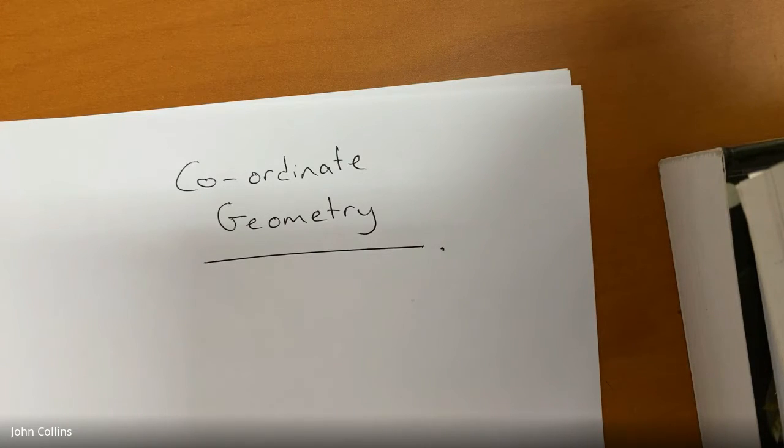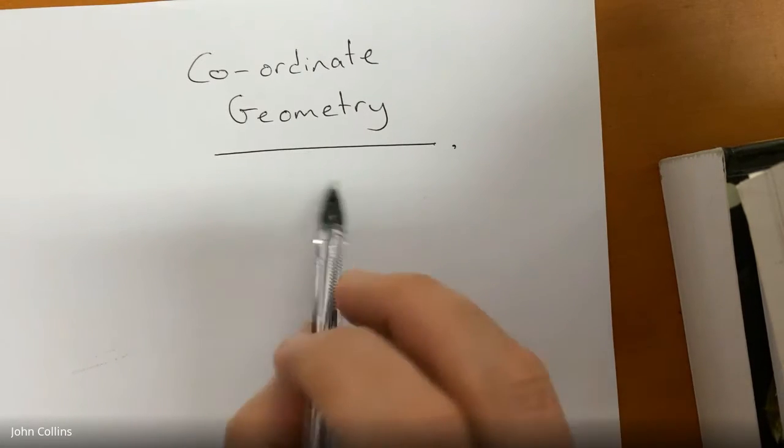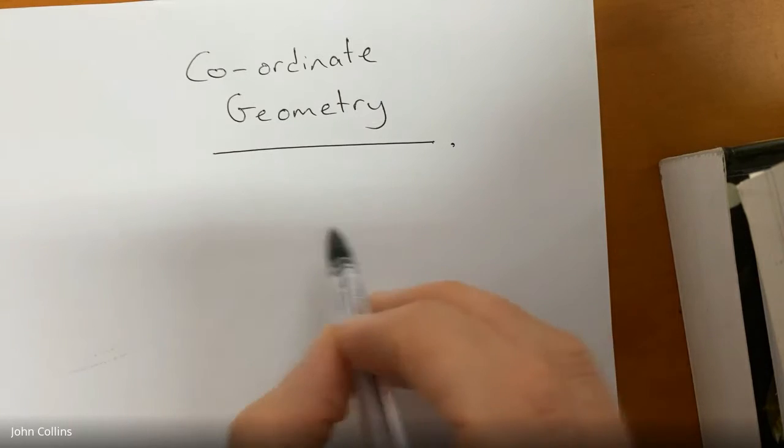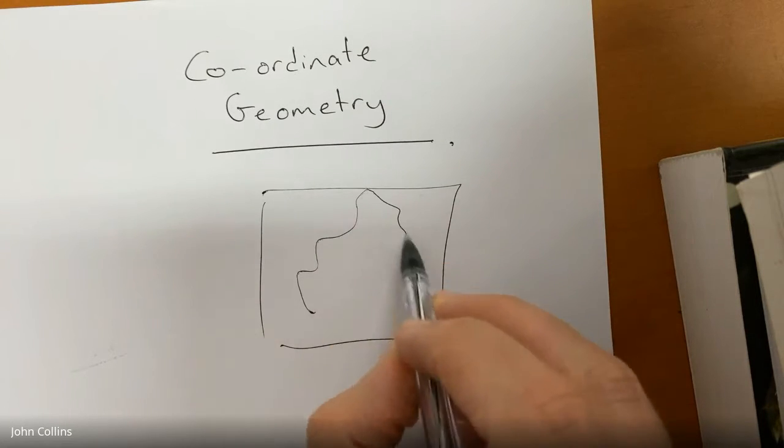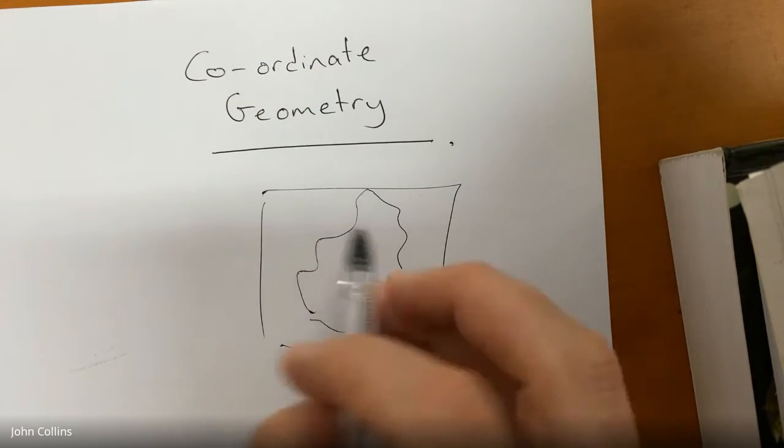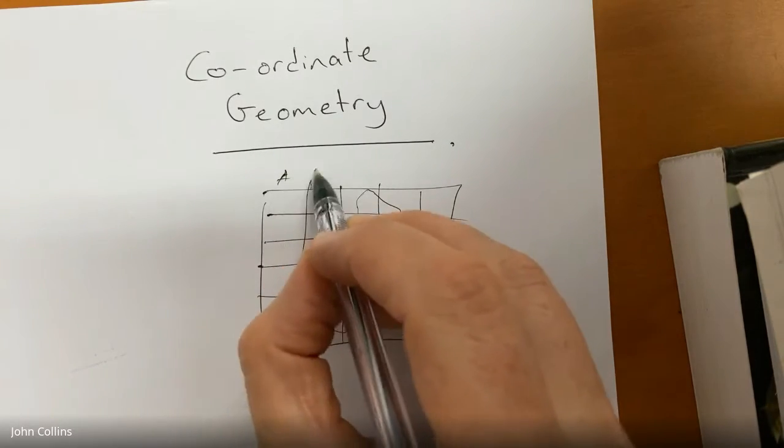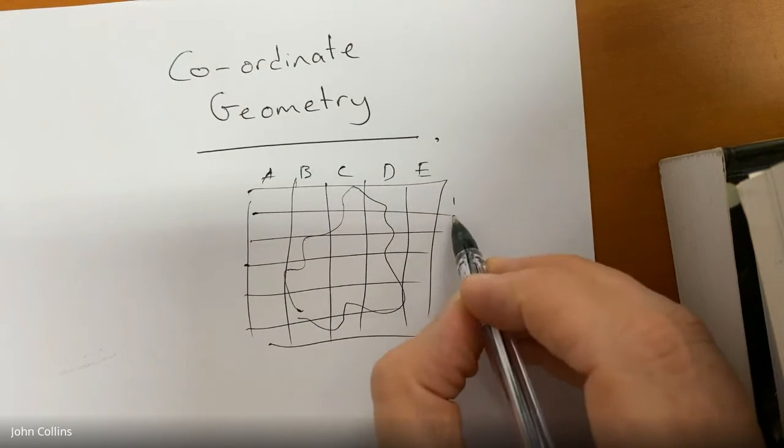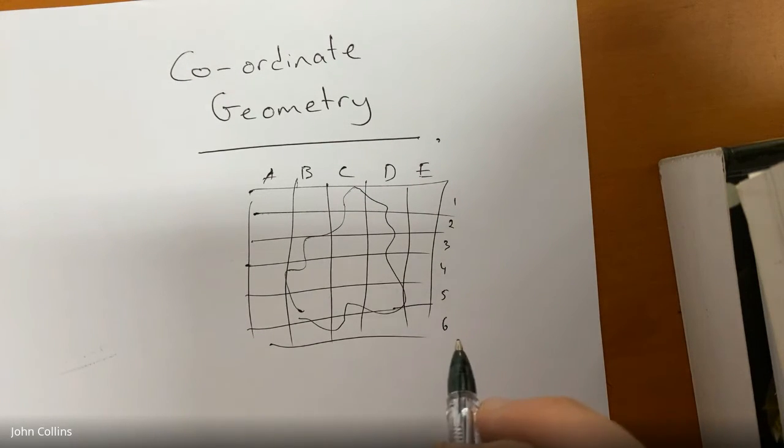So coordinate geometry, well, you almost certainly come across this before. One of those real life places is maybe in humanities. If you're given a map, it can be broken up into sectors. So perhaps we have A, B, C, D, E here, and then down the side you might have 1, 2, 3, 4, 5, 6. So this map can be broken up into sections.